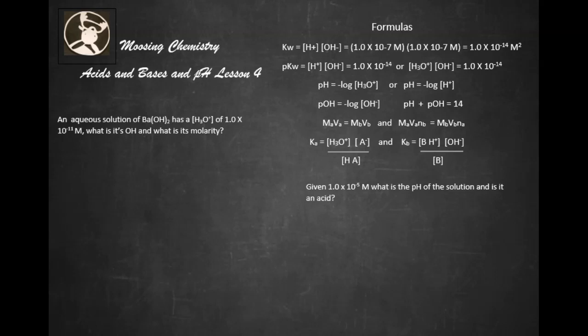Hi, welcome back to Moosing Chemistry. This is acid and basis pH lesson number four. We have two problems to solve in this particular lesson. An aqueous solution of Ba(OH)2 has a H3O+ of 1.0 times 10^-11 molarity. What is its OH- and what is its molarity?